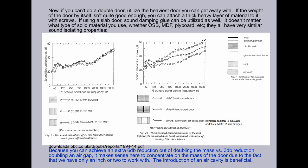Now, if you can't do a double door, utilize the heaviest door you can get away with. If the weight of the door by itself isn't quite good enough, you can attach a thick heavy layer of material to it with screws. If using a slab door, sound damping glue can be utilized as well.